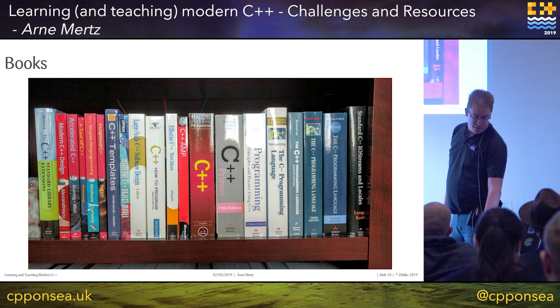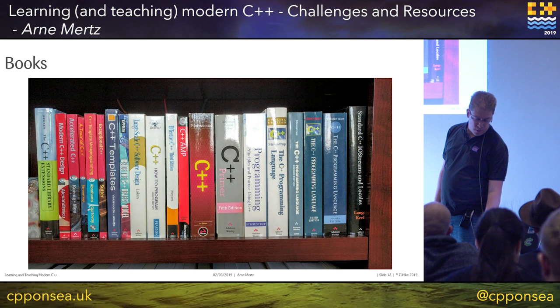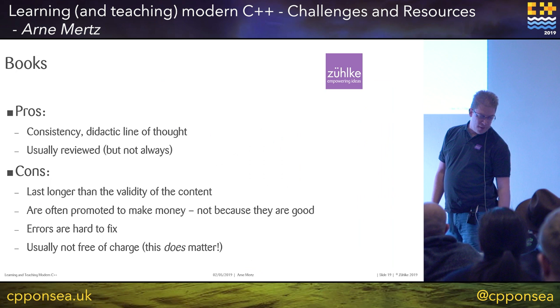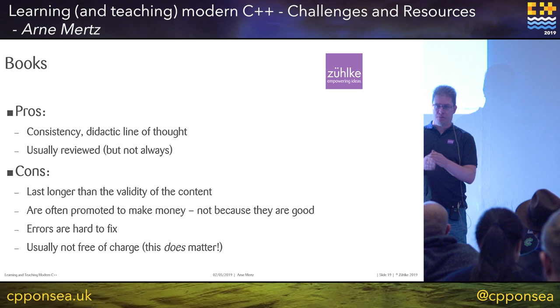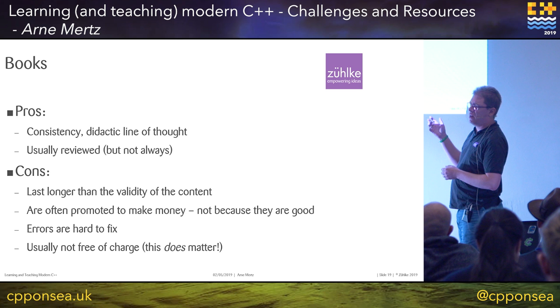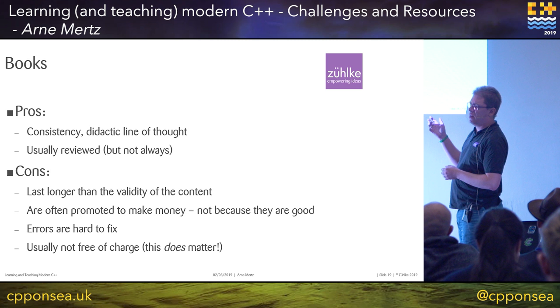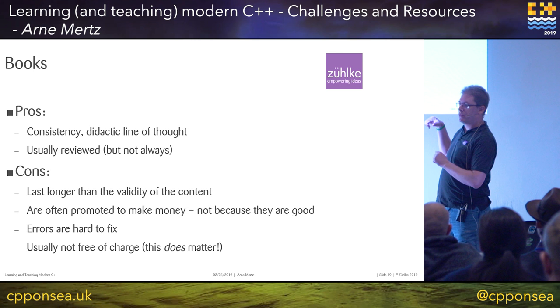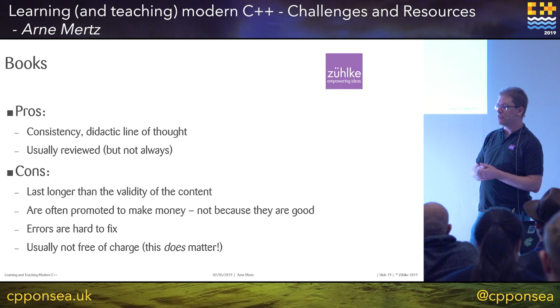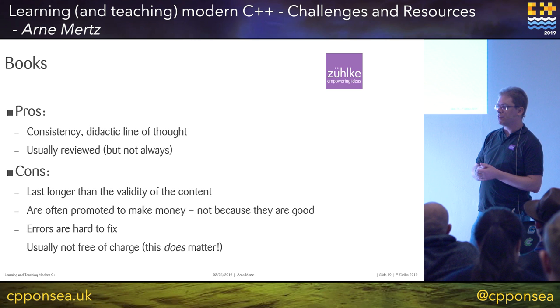Next resource: books. There are definite pros — they are large, have direct context and a curriculum you can follow from start to finish. Books are usually reviewed, so you can trust the content to some extent. With recent self-publishing services, I've experienced cases where someone claimed to review the book and just gave a thumbs up, so you practically have no review at all. Cons: books last much longer than the content in them is valid.